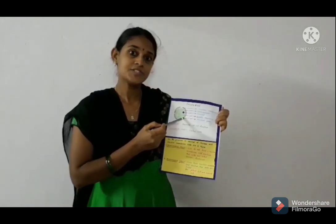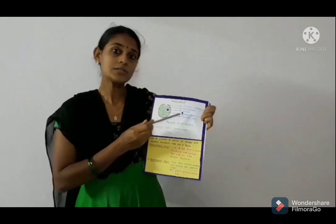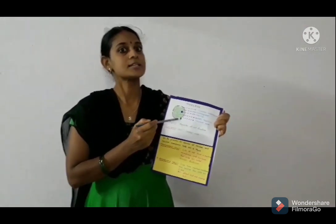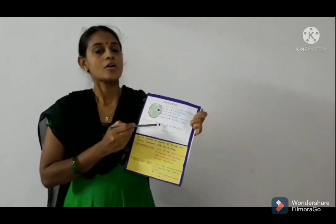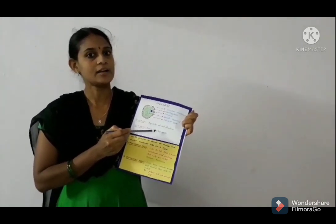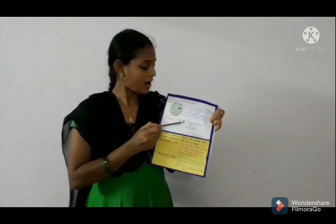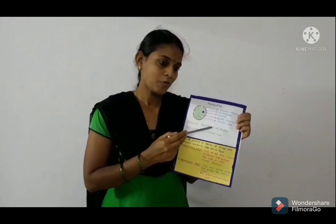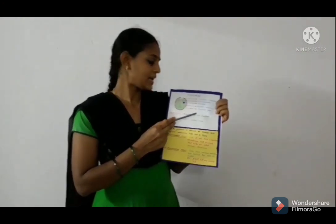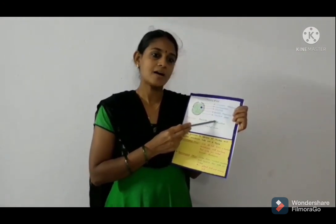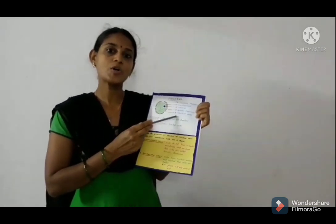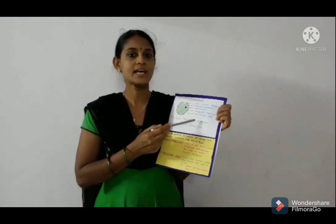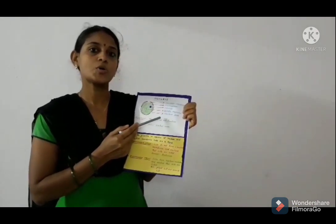Nucleus contains genetic information and all cell functions are controlled by the nucleus. So nucleus is called the control room of the cell, or the brain of the cell. Why is nucleus called the cell's control room? Because all cell functions are controlled by the nucleus.